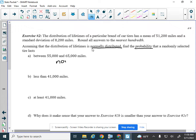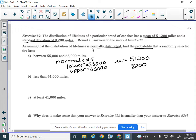So for the first one, I'm going to write down the normal CDF. And I'm going to write down for my lower value, 55,000. My upper is 65,000. My mean here is 51,200. And my standard deviation is 8,200. So once that information is written down, if I type it in my calculator, I would come out with 0.28 to the nearest hundredth.